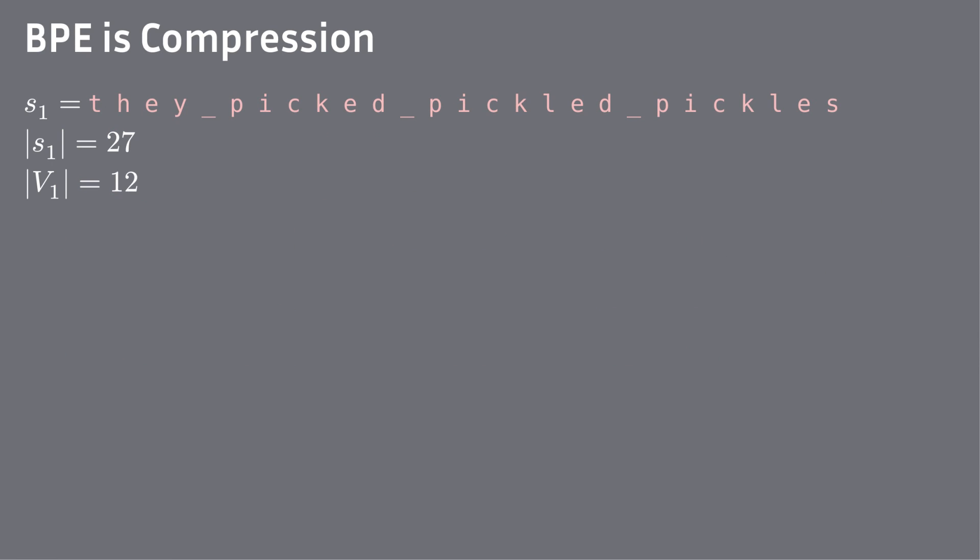BPE transpired out of thin air — it was initially invented for compression and not NLP. Let's look at what that means when we say BPE is compression. We have a sequence of 27 characters, and there are 12 unique characters. From information theory, we need about 4 bits per character, and in total 108 bits.